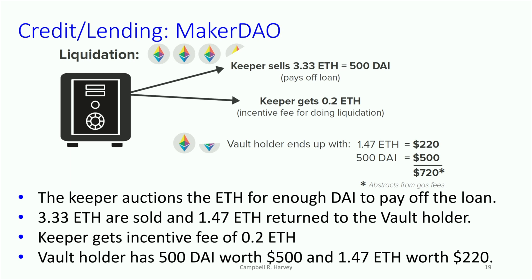Let's go through what a liquidation at 1.5 — or think of it as 1.49 — actually looks like. The keeper goes into the vault and liquidates 3.33 ETH. Those ETH are auctioned off, generating enough money to pay off the loan of 500 DAI. The keeper also receives a fee of 0.2 ETH for performing the liquidation, incentivizing them to keep the protocol strong and efficient.